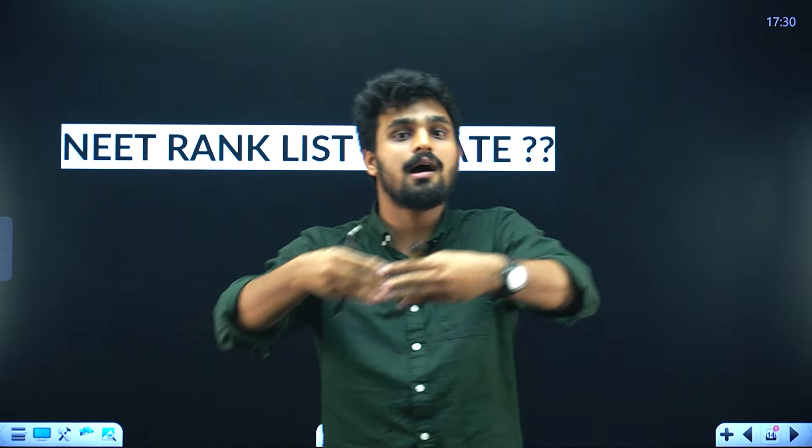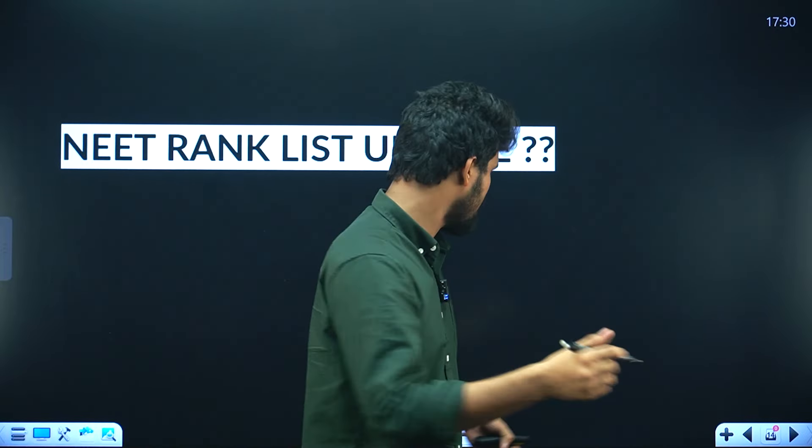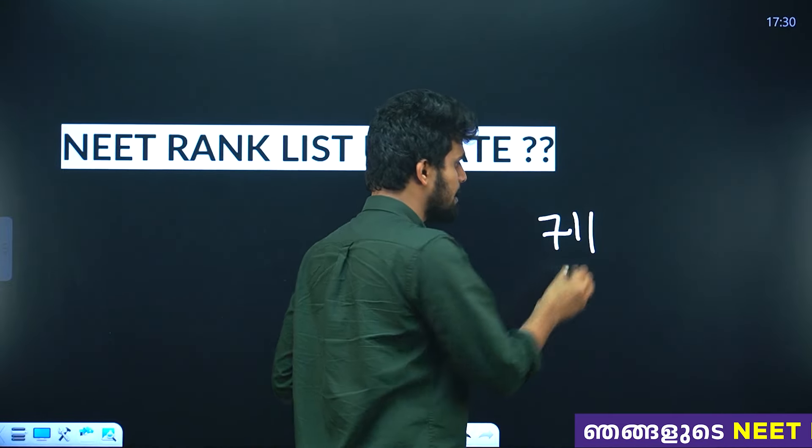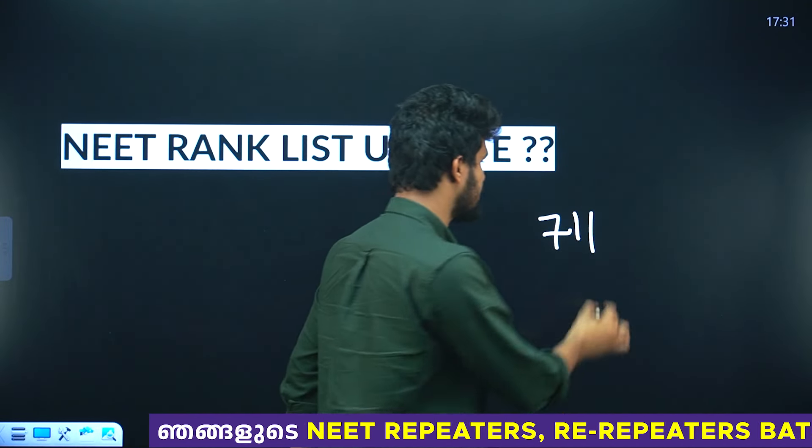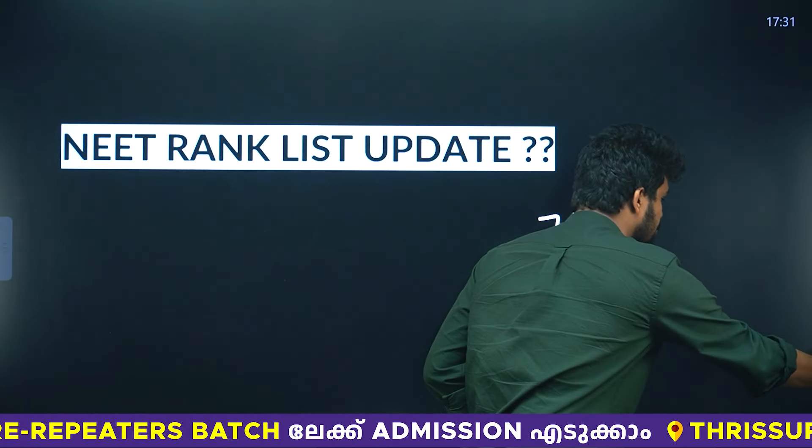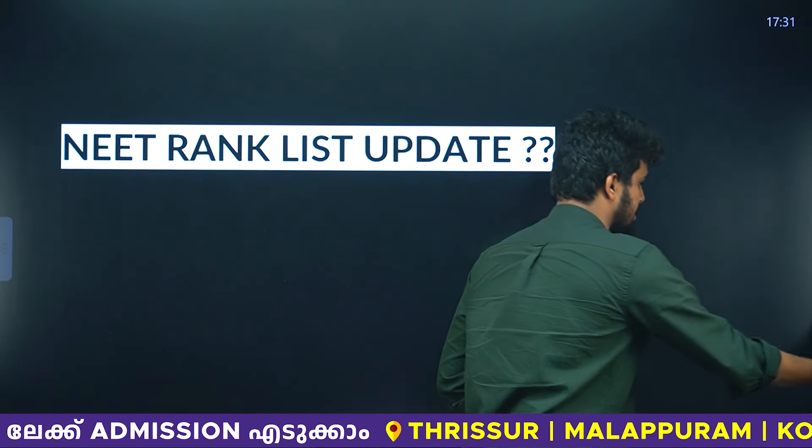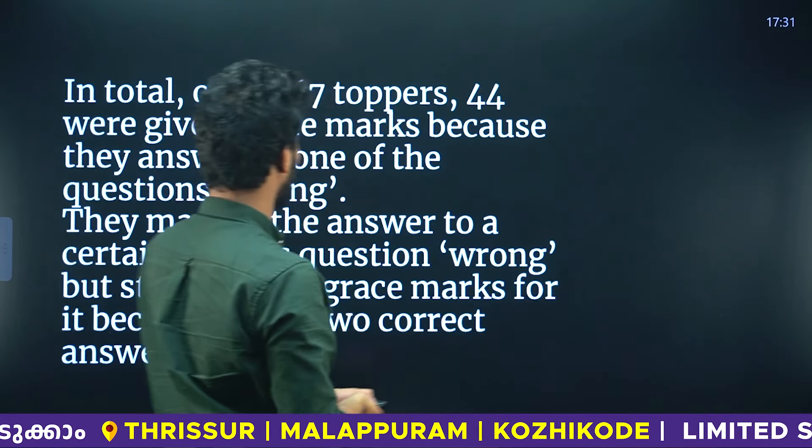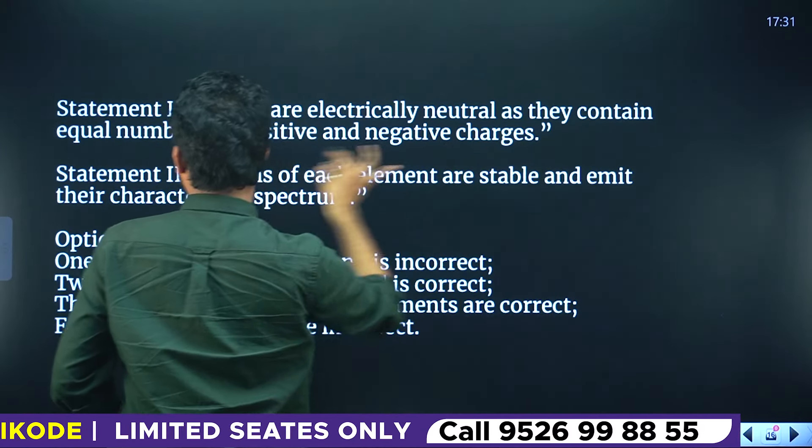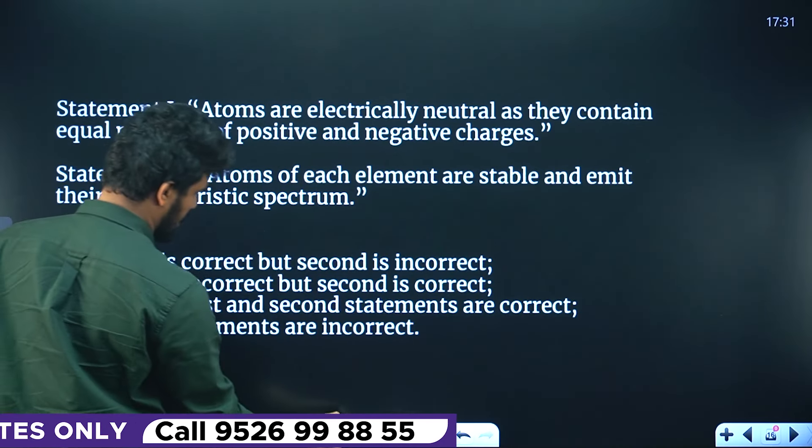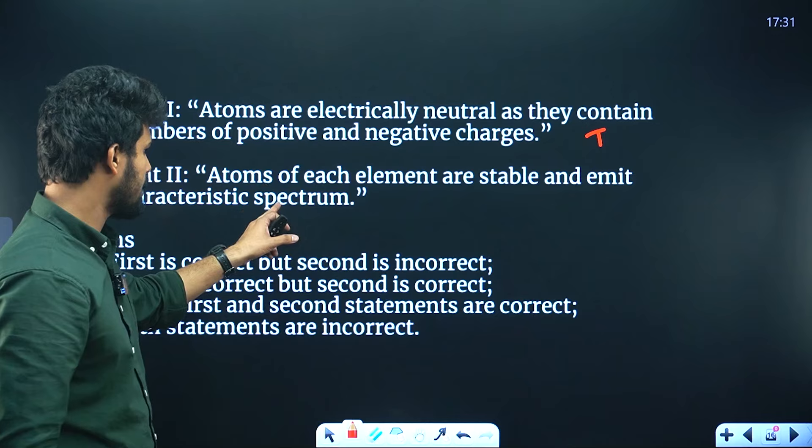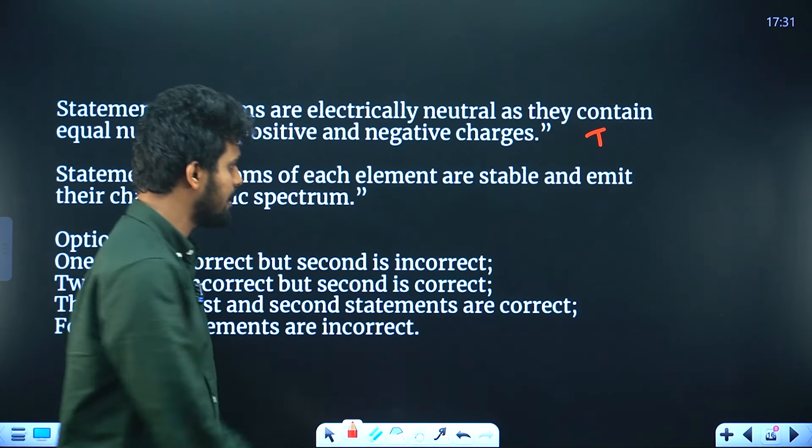I got a petition regarding marks around 710-711. The question is: Statement 1 - atoms are electrically neutral as they contain equal numbers of positive and negative charges. This is a true statement. Statement 2 - atoms of each element are stable.